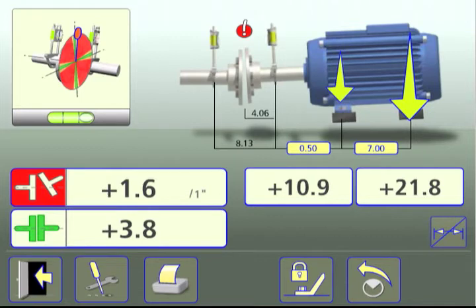The XA offers a solution to base-bound or bolt-bound machines with its feet-lock function. Feet-lock allows the user to select which feet to lock and which feet will be adjustable.